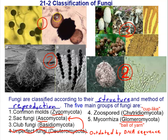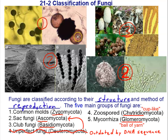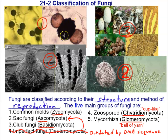When they reproduce sexually, two opposite mating types of hyphae — plus and minus — come together and their nuclei fuse. Those nuclei are haploid; when they fuse, they become diploid, and each diploid nucleus is a zygote. What we have in this zygospore are thousands of zygote nuclei that can germinate and give rise to new individuals. During sexual reproduction they form zygospores, which is why they're known as Zygomycota.